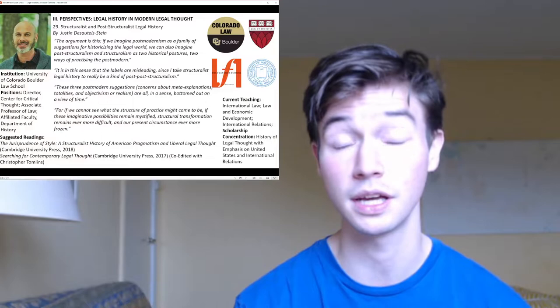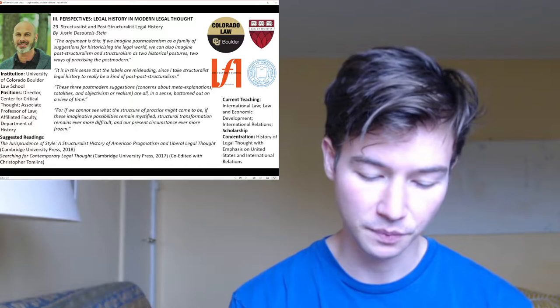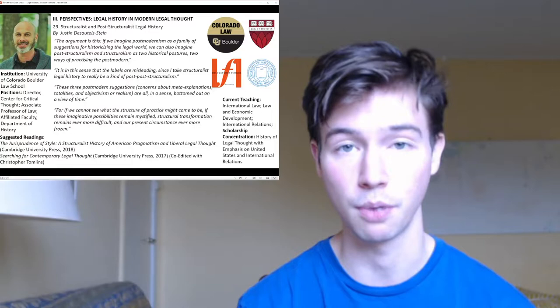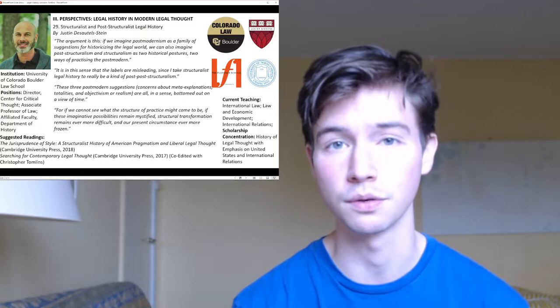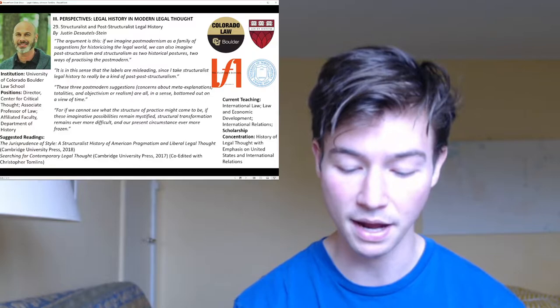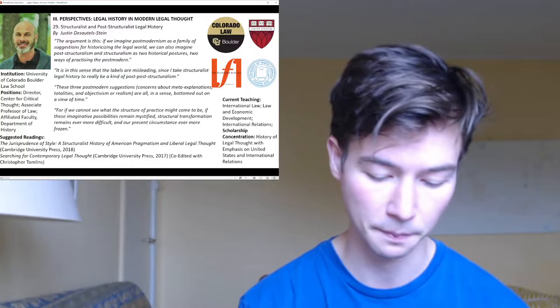Moving into his chapter — Chapter 29, Structuralist and Post-Structuralist Legal History in Part 3 of the Oxford Handbook of Legal History — Stein opens by saying this is a short depiction of historical method in the registers of structuralist and post-structuralist theory, beginning with post-modernism. He says what was or is post-modernism remains forever contested, but it will provide landmarks upon which we can build an understanding of post-structuralism and structuralism. If post-modernism is a family of suggestions for historicizing the world, post-structuralism and structuralism are two historical postures — two ways of practicing the post-modern.